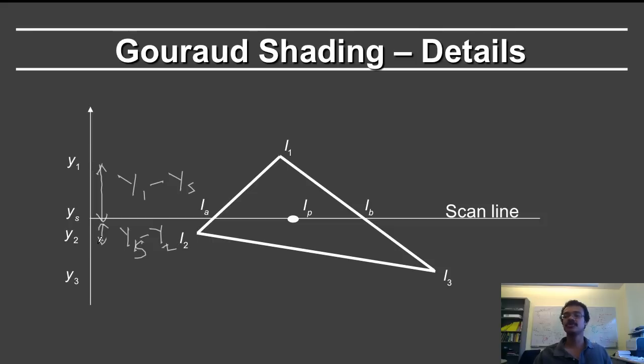Now it's just a question of doing the standard interpolation formula. i1, because it's further away, will be multiplied by the smaller quantity ys minus y2. This quantity will multiply i2. Indeed that's the formula here: i1 times ys minus y2 plus i2 times y1 minus ys, and divide the whole thing by the total length y1 minus y2. That's the formula for iA.